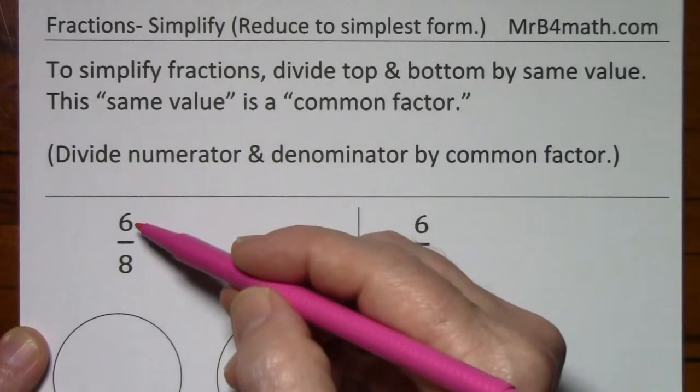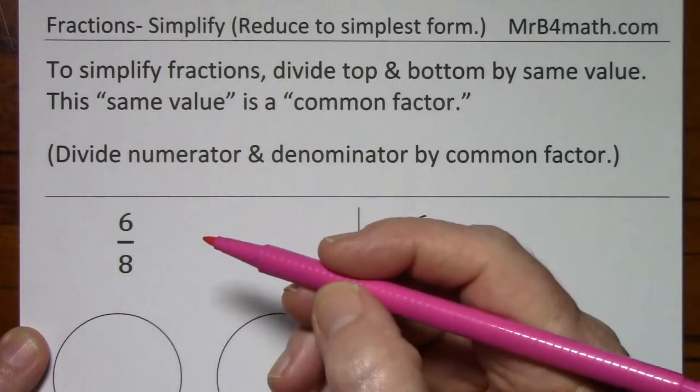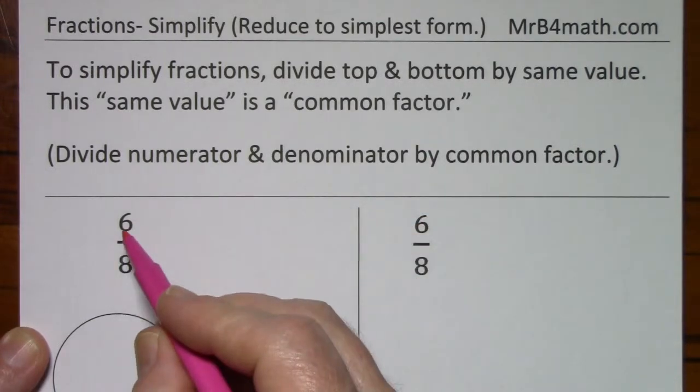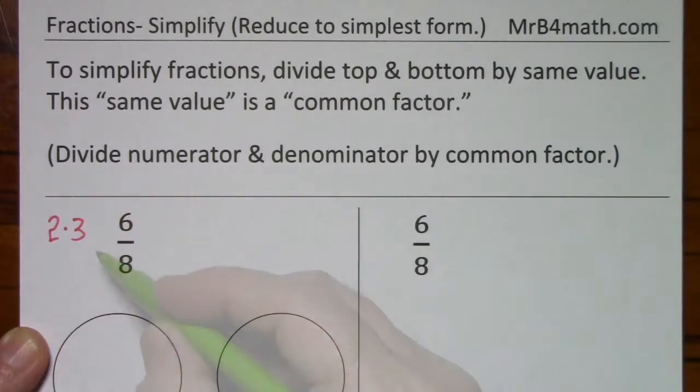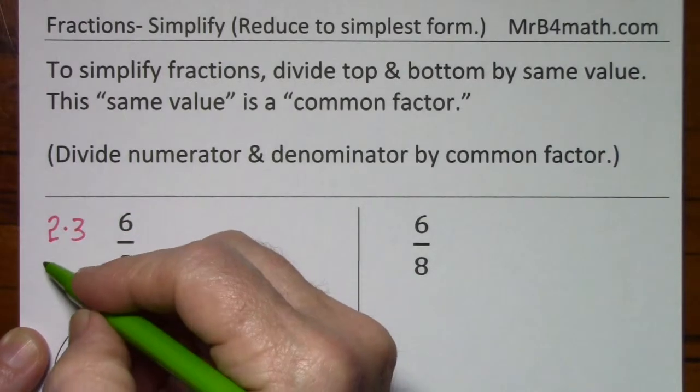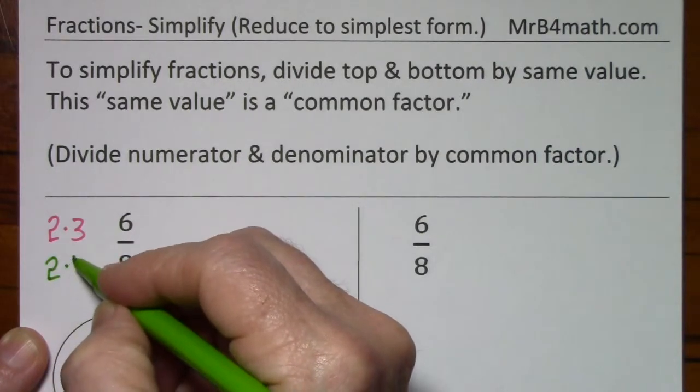So if I want to write 6 eighths with common factors revealed, I can write 6 as 2 times 3. I can write 8 as 2 times 4.